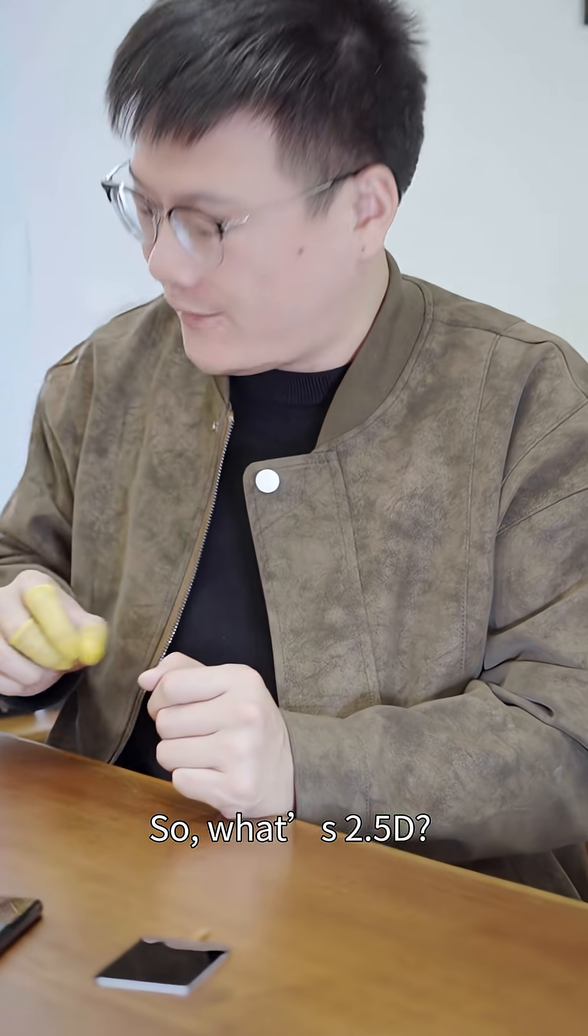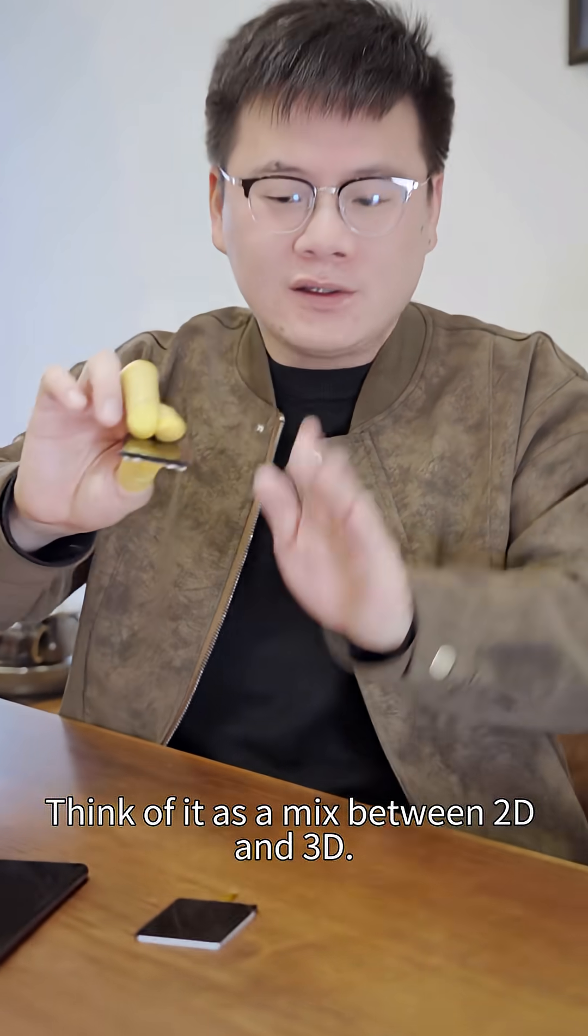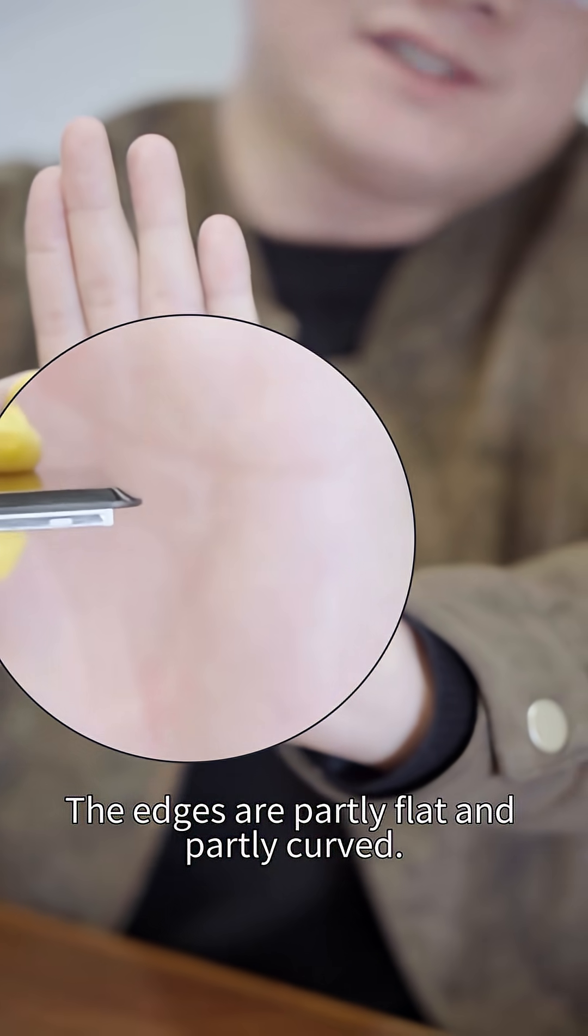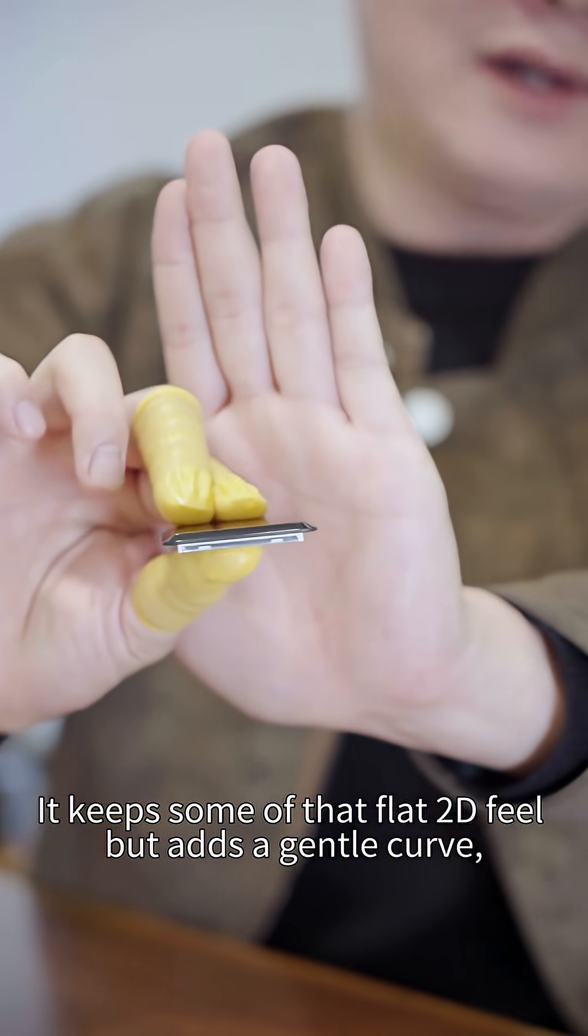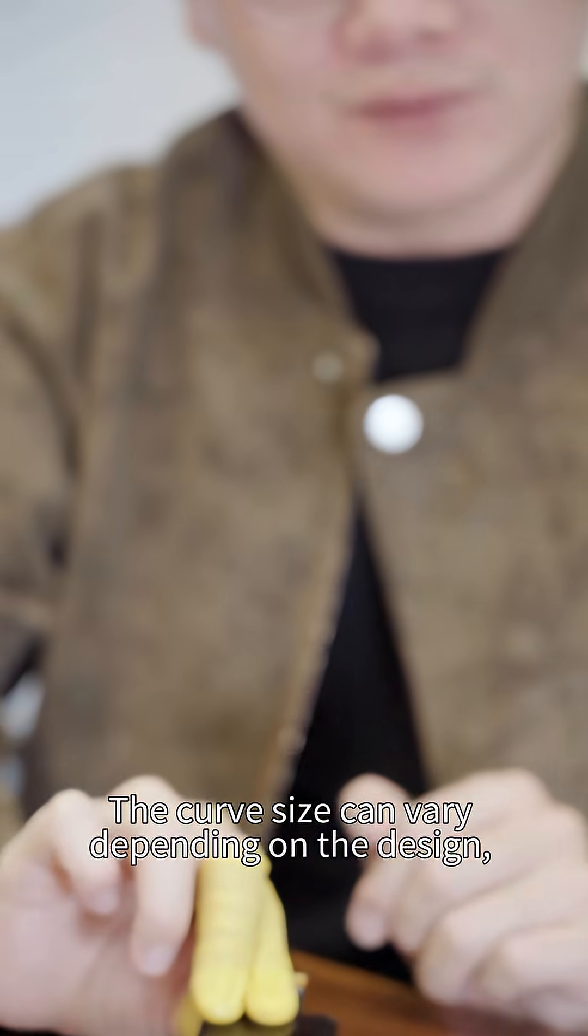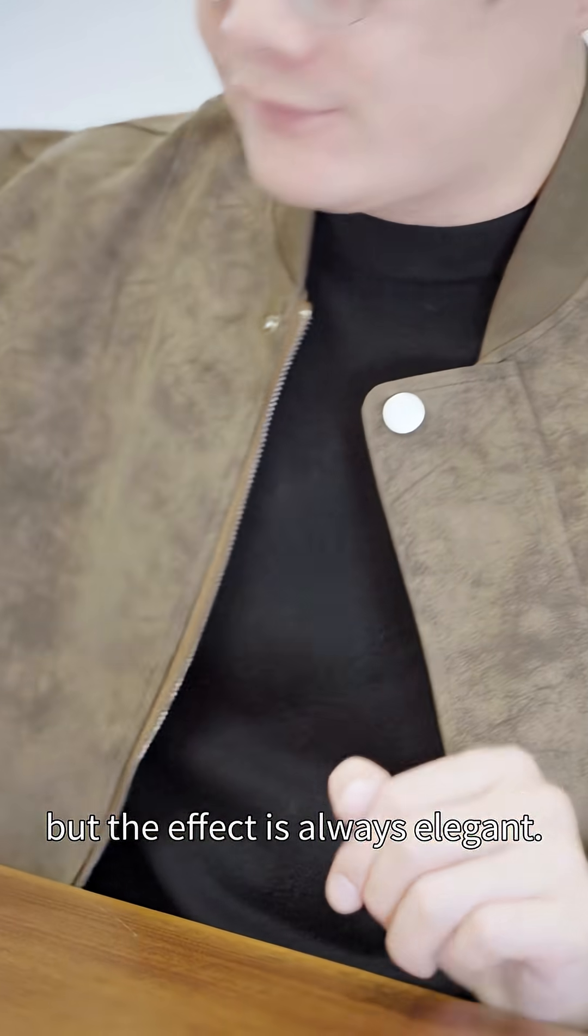So, what's 2.5D? Think of it as a mix between 2D and 3D. The edges are partly flat and partly curved. It keeps some of that flat 2D feel but adds a gentle curve, giving it a premium look. The curve size can vary depending on the design, but the effect is always elegant.